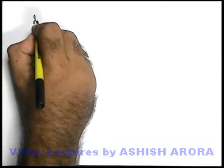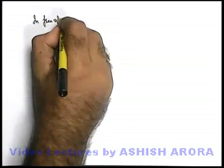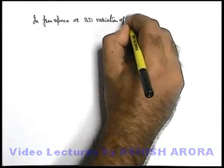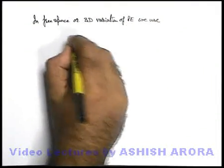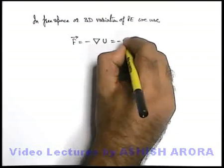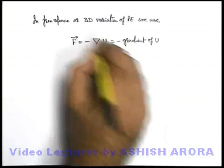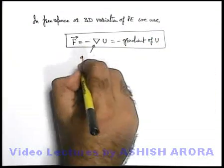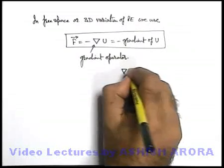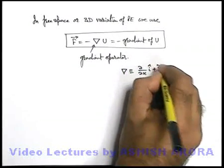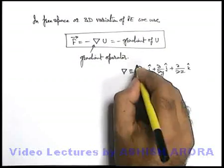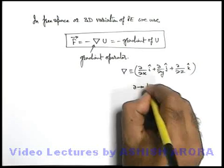In three-dimensional free space, or for three-dimensional variation of potential energy, we use: F vector equals negative of del U. This del is called the gradient operator, and it is also written as gradient of U. The gradient operator del is defined as: del over del x times i-cap, plus del over del y times j-cap, plus del over del z times k-cap. The small del here is called the partial derivative operator.